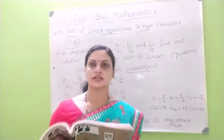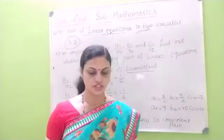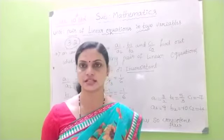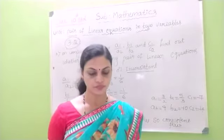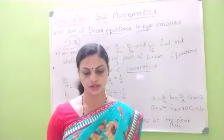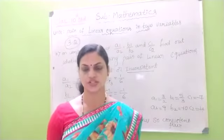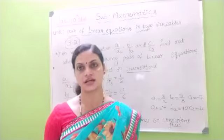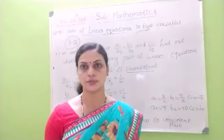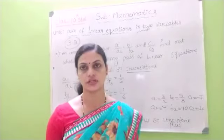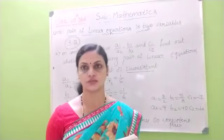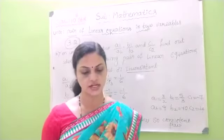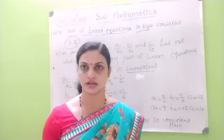Now in the textbook, the fourth question of exercise 3.2: which of the following pairs of linear equations are consistent or inconsistent? There are four pairs — one, two, three, four — four pairs. We need to determine whether each is a consistent pair or inconsistent pair.